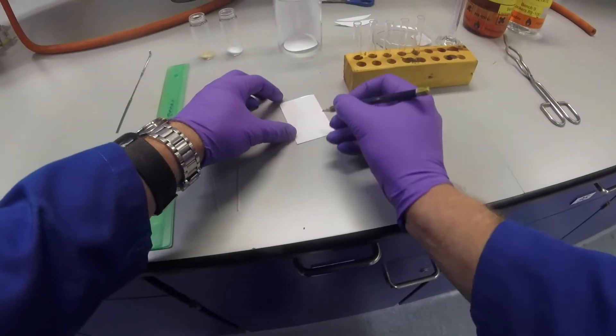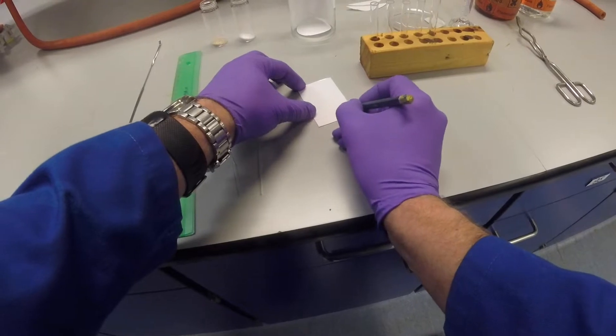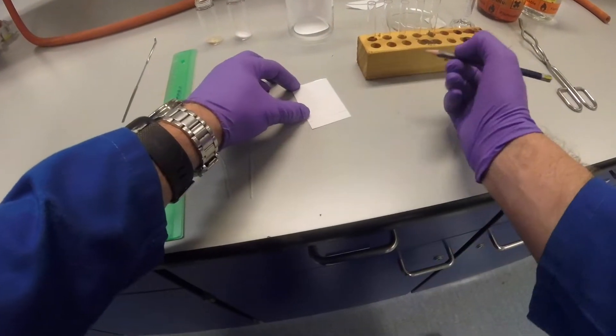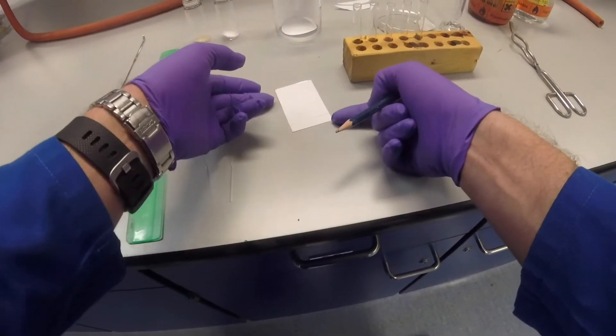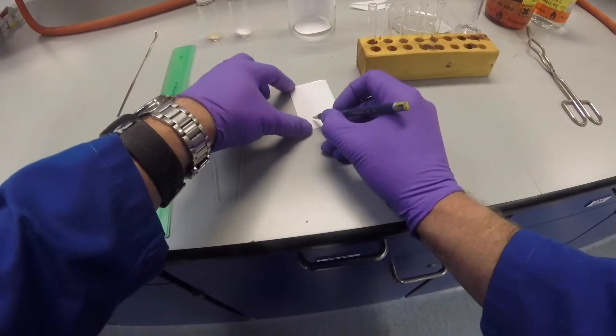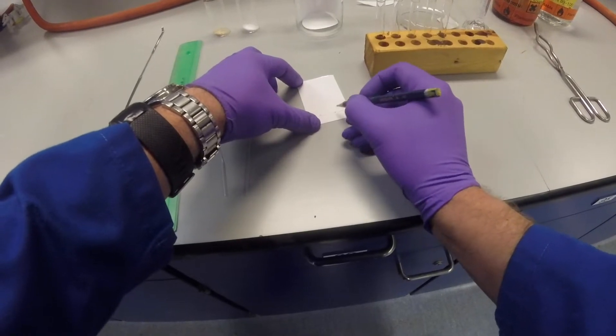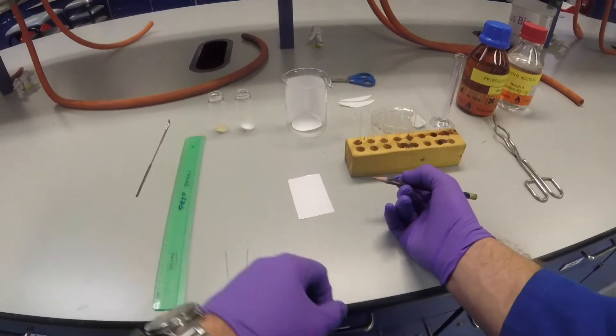The first thing we need to do on our plate is draw ourselves a nice straight line about a centimeter from the bottom, check that the plate is intact and hasn't got lots of silica coming off the sides, and then put a little pencil mark where we're going to do the spots.